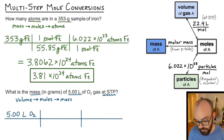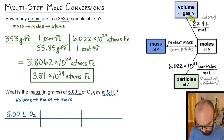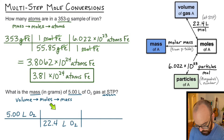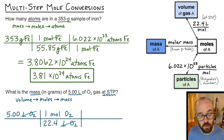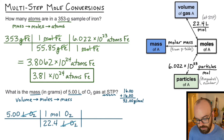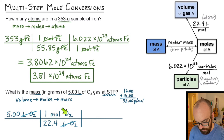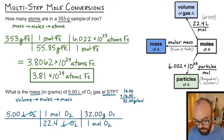I start with what I know: 5.00 liters of oxygen. My first conversion is from volume to moles using 22.4 liters per mole — liters go in the denominator so they divide out, leaving moles of oxygen. Then I convert from moles to mass using the molar mass. The molar mass of oxygen from the periodic table is 16, but oxygen gas is diatomic (O₂), so I add 16 plus 16 to get 32 grams per mole. Moles go in the denominator and 32 grams per mole goes in the numerator.